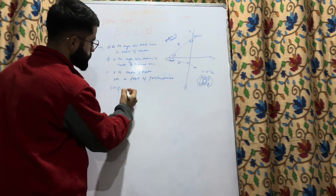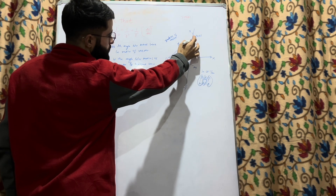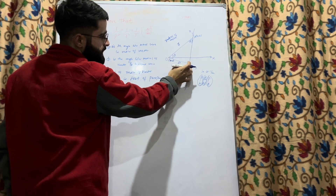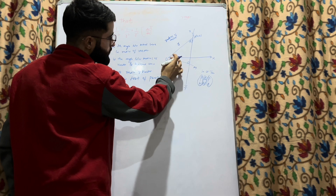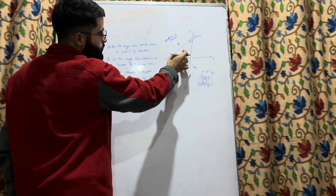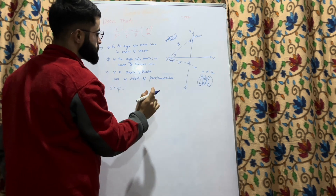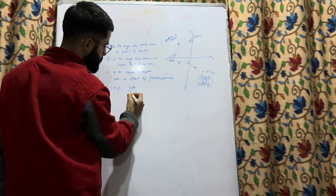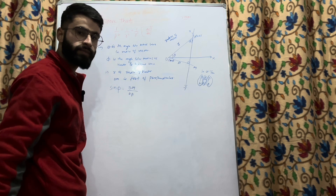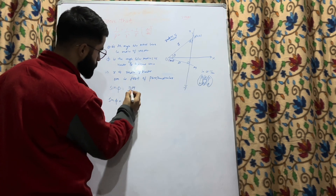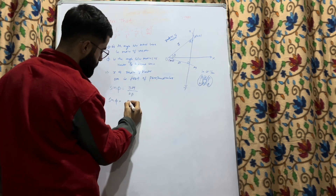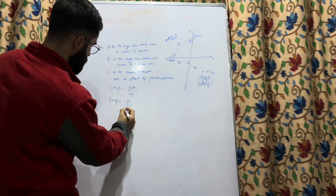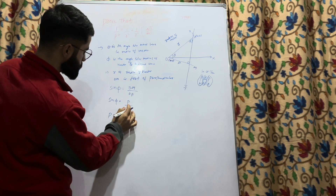Here φ is the angle made with the tangent, so the opposite side of φ is the perpendicular and the hypotenuse is OP. So sin(φ) = OM/OP. The distance OM is p and OP is the radius vector r. Therefore sin(φ) = p/r, which gives us p = r·sin(φ).